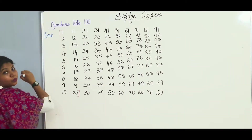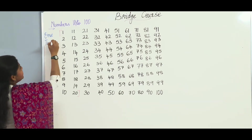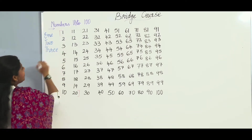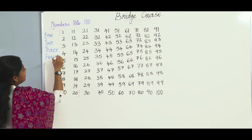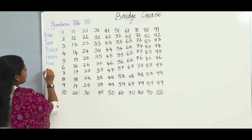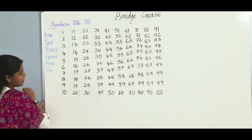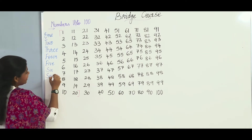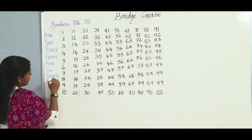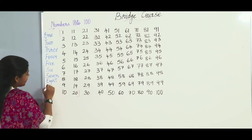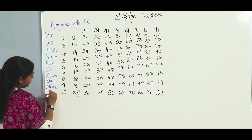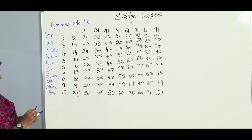ONE 1, TWO 2, THREE 3, FOUR 4, FIVE 5, SIX 6, SEVEN 7, EIGHT 8, NINE 9, TEN 10.